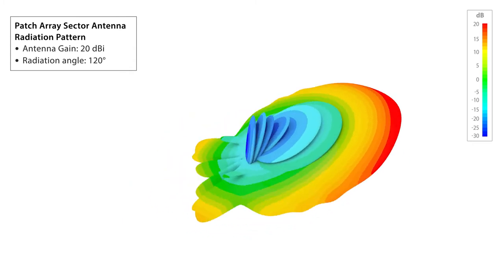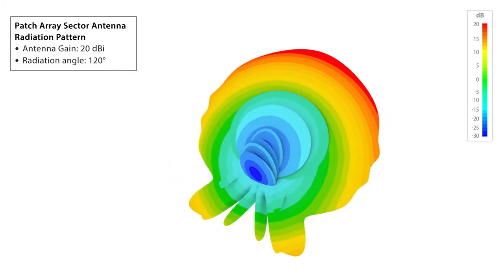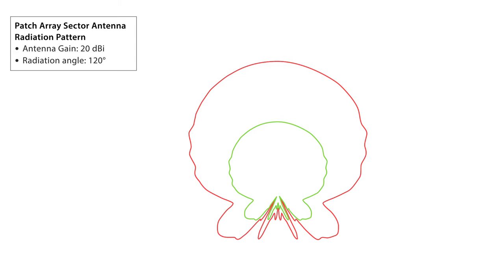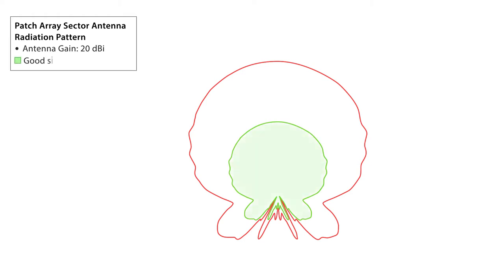Let's look at a more simplified 2D view that is normally found in spec sheets and WISPs are used to reading. When we look at typical radiation patterns, we usually think of them in one way: only the measured gain of the main lobe in relation to your CPE's distance.